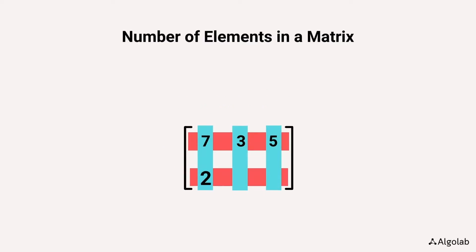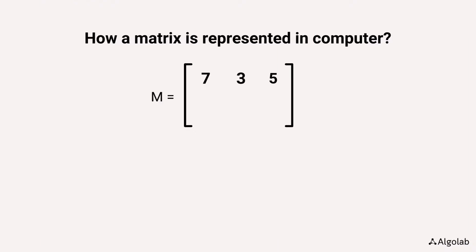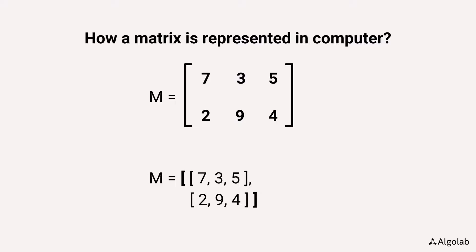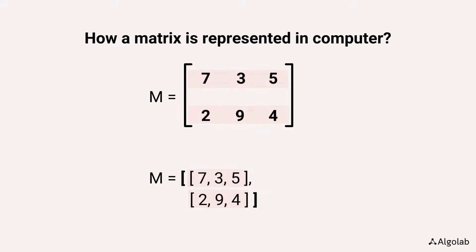For example, the shown matrix has order 2 by 3 and hence has six elements. In a computer, an array of arrays usually represents a matrix. In this array, every subarray represents a row, so the number of subarrays corresponds to the number of rows. There are equal numbers of elements in each subarray, and this number represents the number of columns in the matrix.